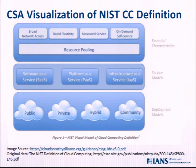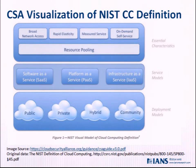The NIST definition shows the different kinds of characteristics of the cloud itself — the elasticity for bursting, the fact that it's on demand, that it's very often self-service, that you pay for it as you go. And then a really critical one for security is what happens most of the time to give you all that great elasticity and manageability: resource pooling, bringing together all of those resources.